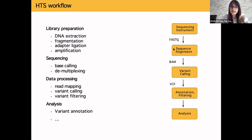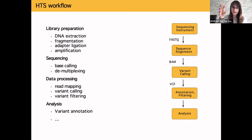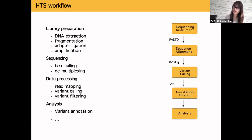The FASTQ file includes the actual bases and the quality scores associated with each base in a read, encoded in ASCII minus 33 code, Phred scaled. Once we have this FASTQ file, we perform sequence alignment — identifying where in the reference genome these reads came from — which is the read mapping step. At the end we have a BAM, SAM, or CRAM file, all equivalent but with different compression methods.